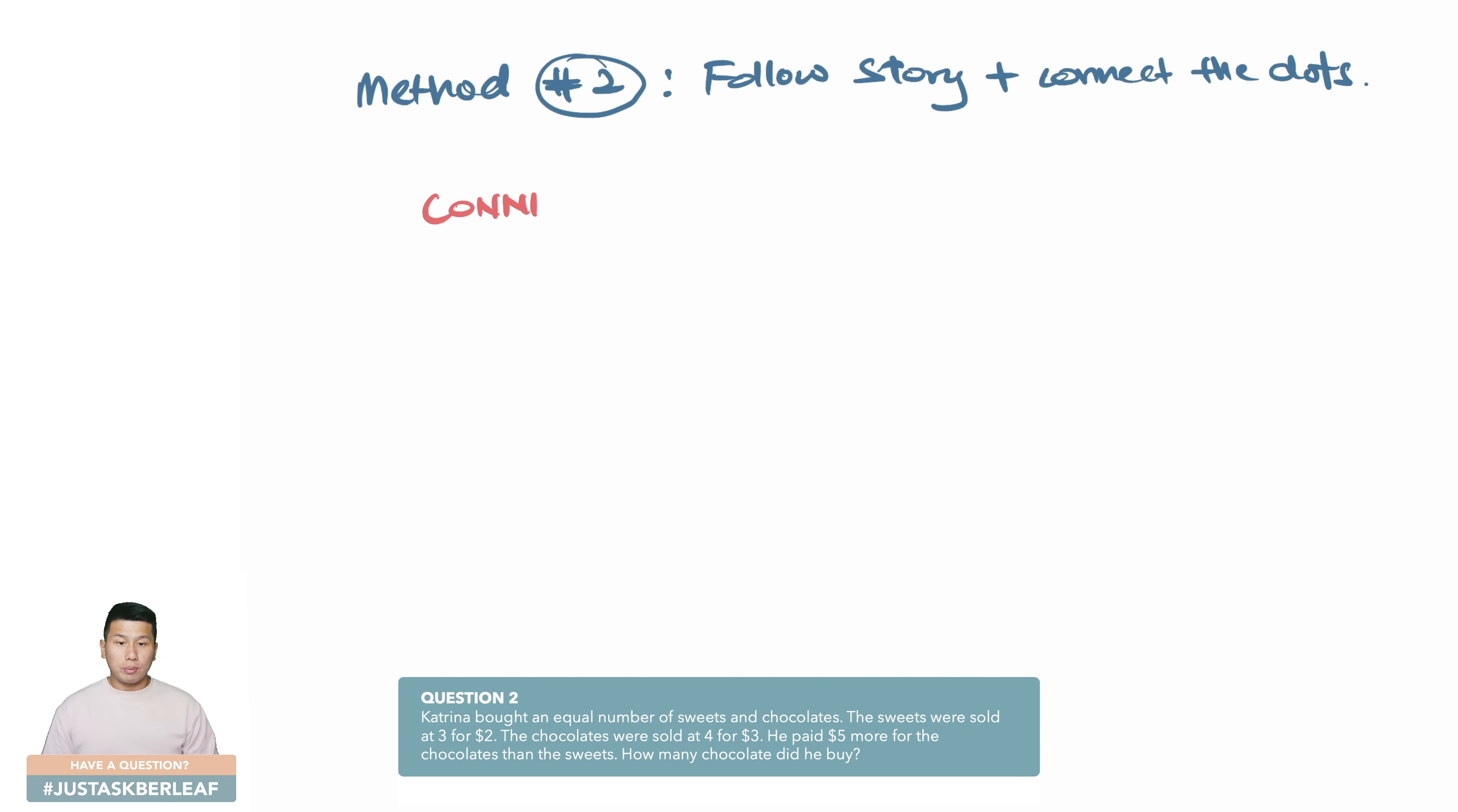Method number two, which is to follow the story and connect the dots. This process can turn out to be more straightforward because we are going to use the connecting factor. We're going to identify it straight away at the start, which is actually the last piece of information that you can find in the question.